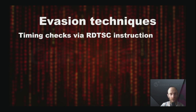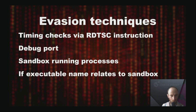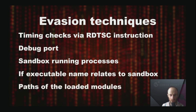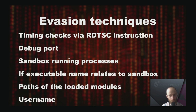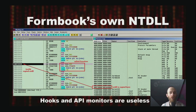Evasion techniques include timing checks via a dedicated CPU instruction, and checking the debug port. Formbook makes a snapshot of running processes and checks if any belong to sandboxes. The same process is repeated for particular executable names usually used in sandboxes. Formbook also checks paths of loaded modules and, as a final touch, a username. A sophisticated technique implemented is mapping its own NTDLL copy, which renders all hooks and API monitors useless, even when they try to intercept the lowest function calls in user mode.